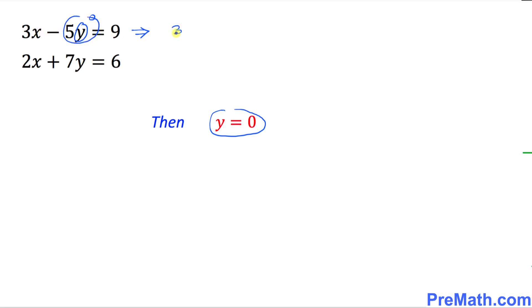So we got 3x minus 0 equals 9, which means 3x equals 9. If we divide both sides by 3, this cancels out and x turns out to be equal to 3.